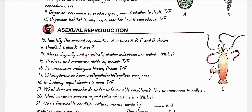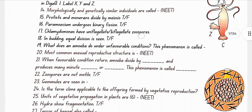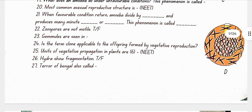The most common asexual reproductive structure is zoospore. When favorable conditions return, amoeba divides by multiple fission and produces many minute amoeba and pseudopodia spores. This phenomenon is called sporulation.